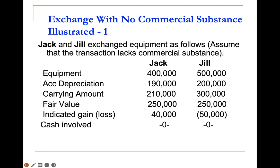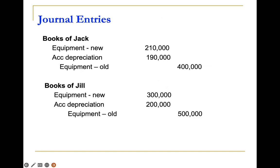In the books of Jill, the carrying amount of the asset given up is $300,000, so record the asset received at $300,000. Journal entry: debit equipment new $300,000; credit equipment old $500,000; debit accumulated depreciation $200,000.